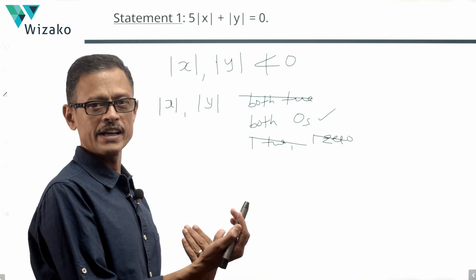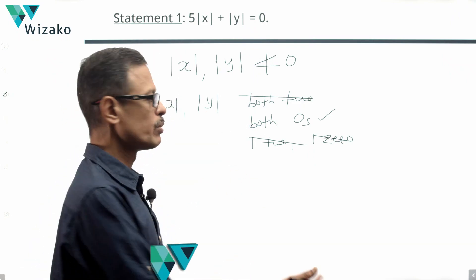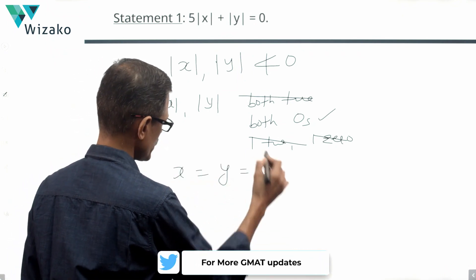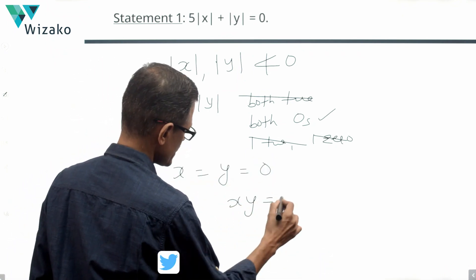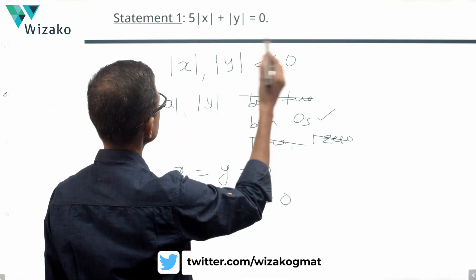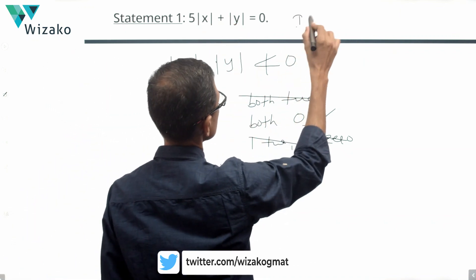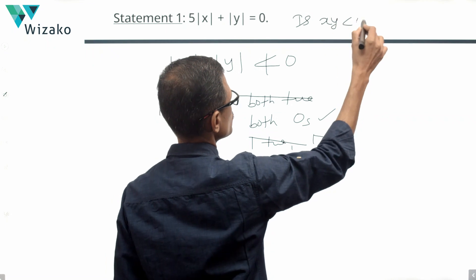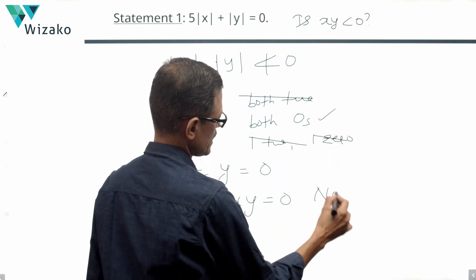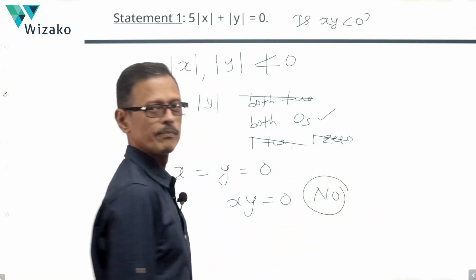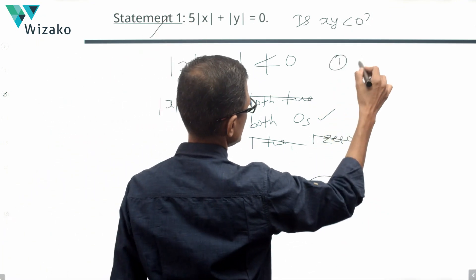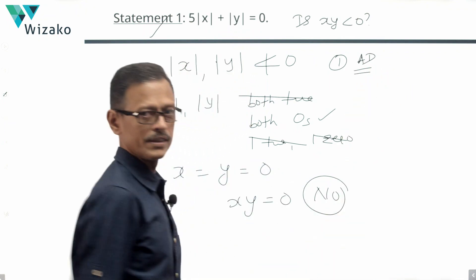So the equation holds only when modulus of X and modulus of Y are both zero, which means X equals Y equals 0. Therefore the product XY equals 0. The question asks: is XY negative? If XY equals 0, the answer is a definite no. Statement 1 alone is sufficient to answer the question. When Statement 1 is sufficient, the answer options are A or D.